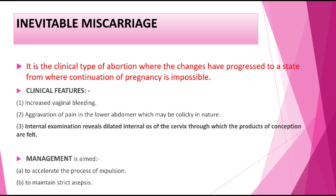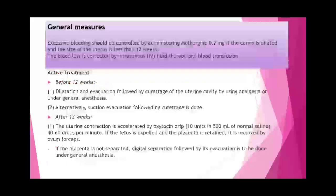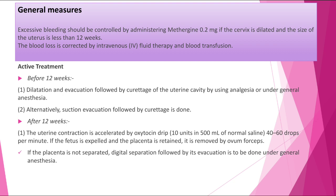Inevitable miscarriage is a clinical type where changes have progressed to a state from which continuation of pregnancy is impossible. Clinical features include increasing vaginal bleeding and pain which may be colicky in nature. Internal examination reveals a dilated internal os and the conceptus can be felt. Management aims to accelerate the process of expulsion while maintaining strict asepsis.